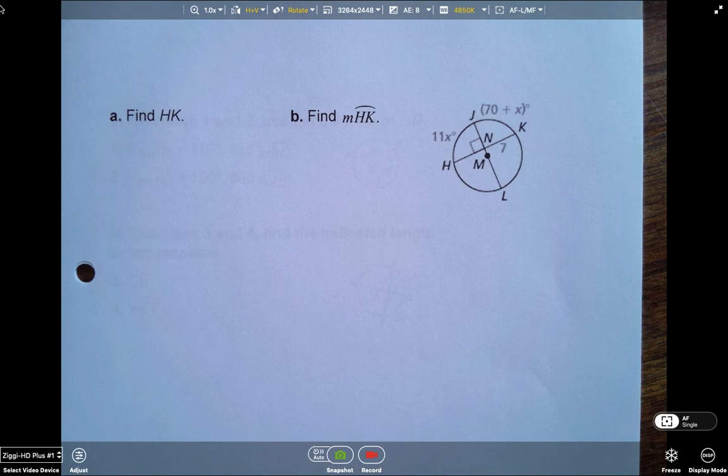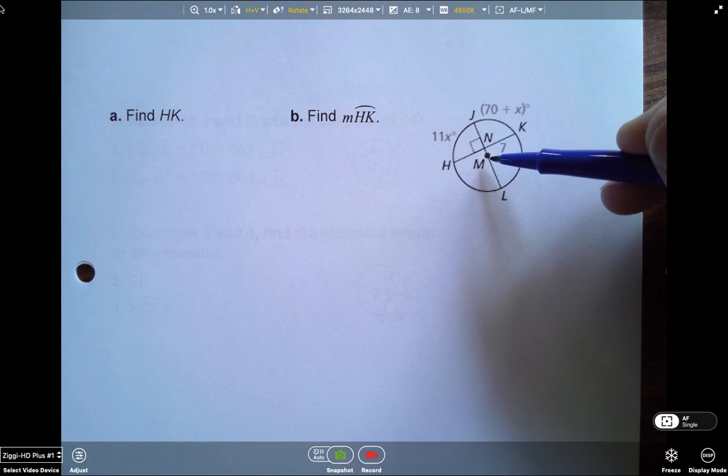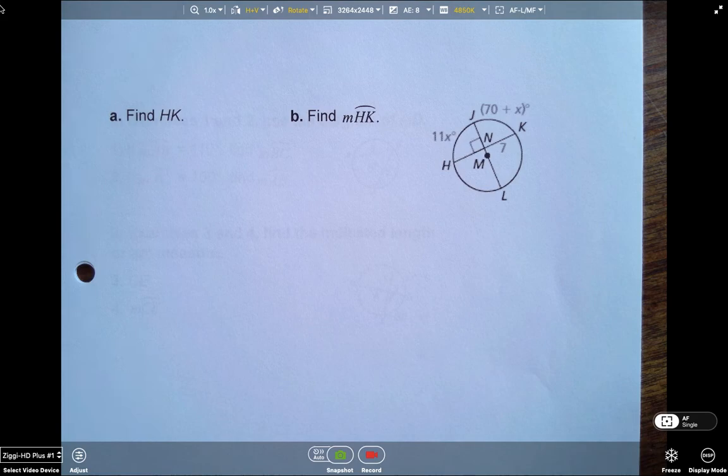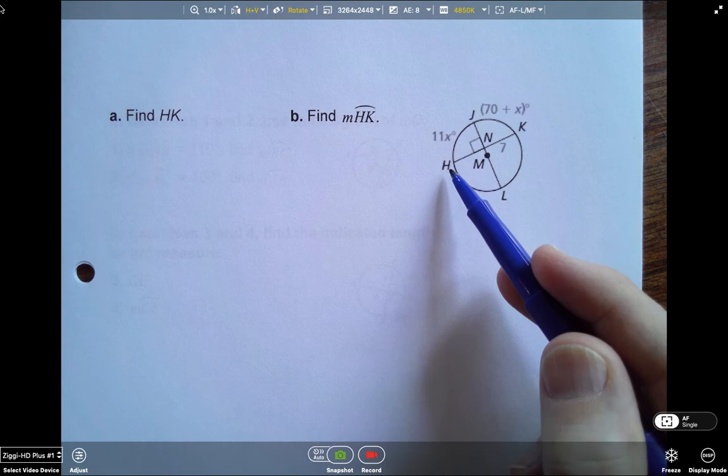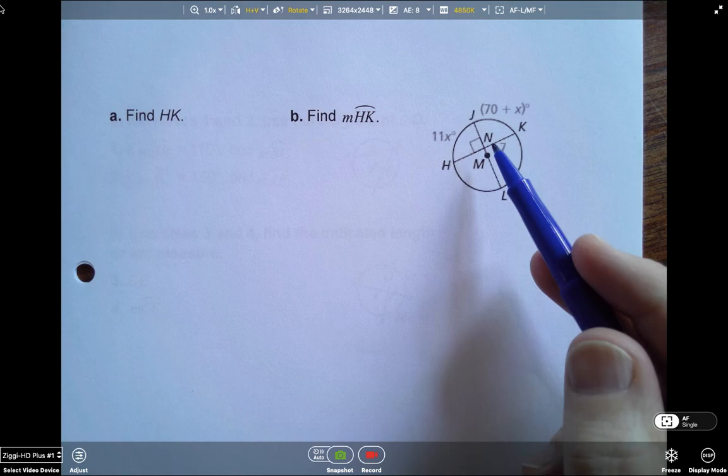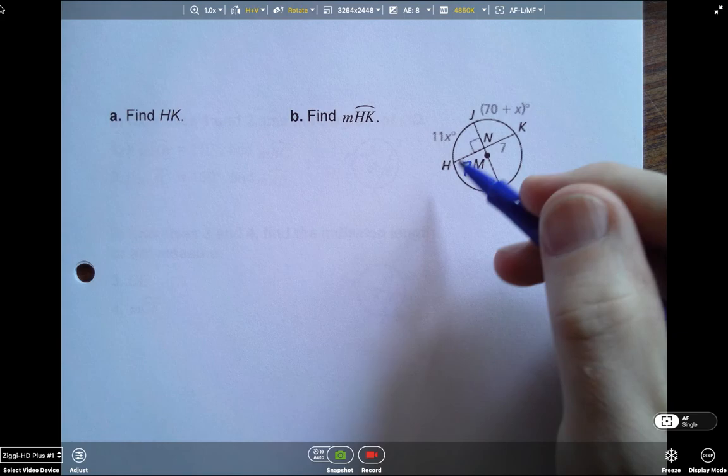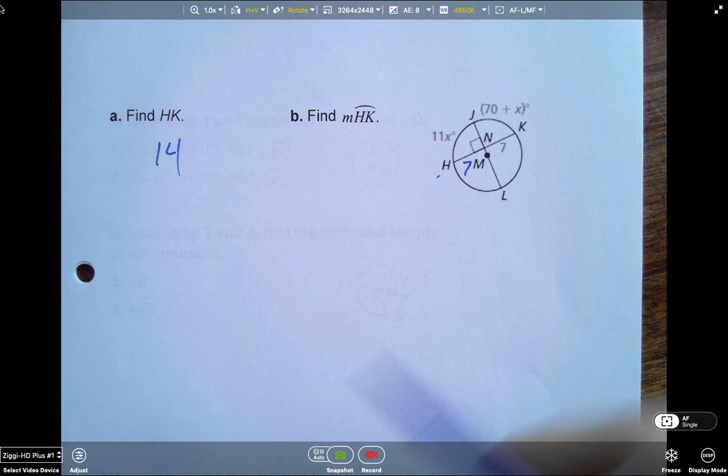All right, we're going to look at this one. It gets a little bit more complex. So what do we know on our picture? Well, we know that JL is a diameter. We know this because it goes through the center. We also know that it's perpendicular. So according to our second note card, we know that since this is a diameter and it's perpendicular to this chord, that it bisects the chord. So that means that H to N has to be the same as N to K. Well, N to K is 7. So H to N has to be 7. So HK is 14.